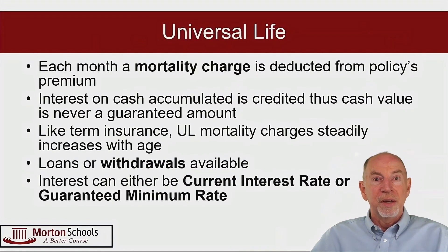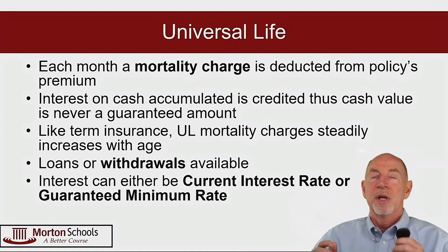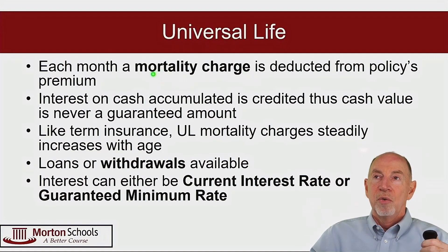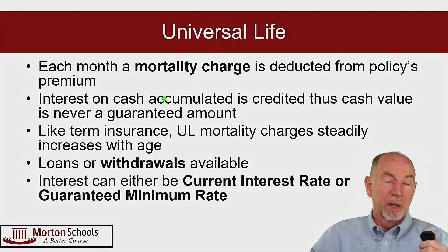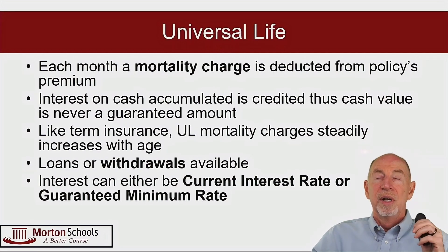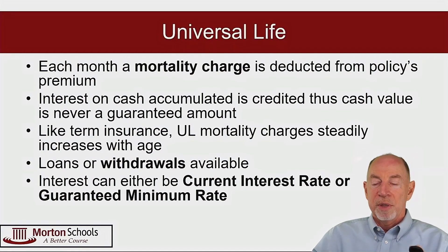Here's the written version of that. When you pay your premium — just like the two-bucket model — a certain amount goes into the insurance bucket to cover the cost of insurance, which we call the mortality charge. All the rest of it — and because the premium is flexible, that can be a little or a lot — goes into the savings bucket, where it earns interest.